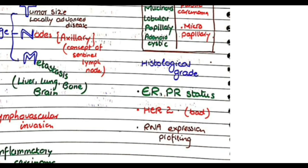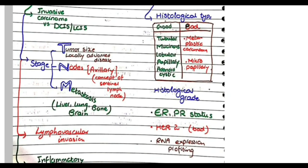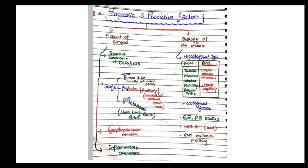Last important point about the biology of the disease is RNA expression profiling. Obviously now the technology and biotechnology has been very advanced and we can do the RNA expression profiling of the tumor cells. This has a growing role in the advancement of the field of oncology. RNA expression profiling can also be done to determine the prognosis of breast cancer. So these are all the factors that determine prognosis of breast cancer.